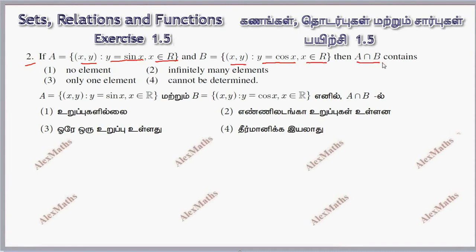Now, A intersection B contains: no elements, infinitely many elements, only one element, or cannot be determined.